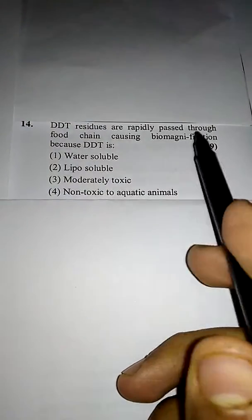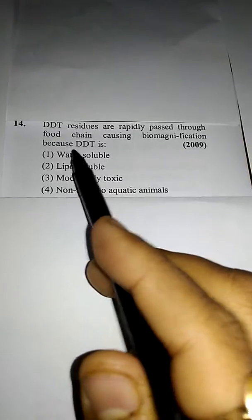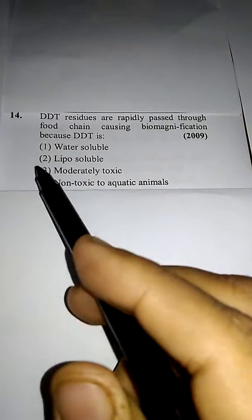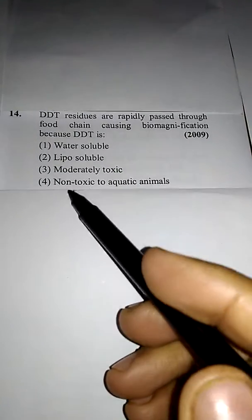Residues are rapidly passed through the food chain causing biomagnification because DDT is... DDT ki wajay se biomagnification hota hai, sabhi ko pata hai.